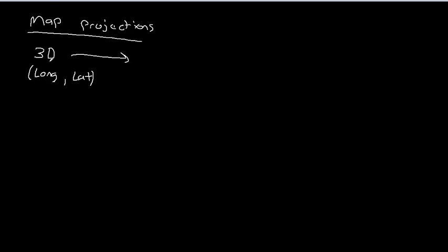And we want to convert that to a 2D coordinate system, something that we can put on a piece of paper. So this would be our traditional sort of X and Y.